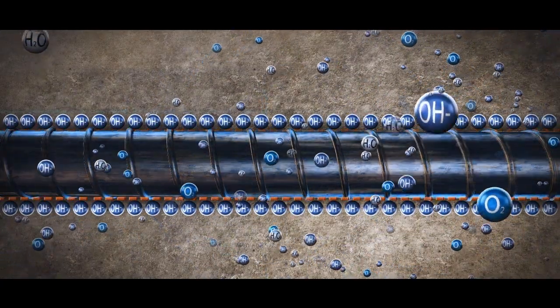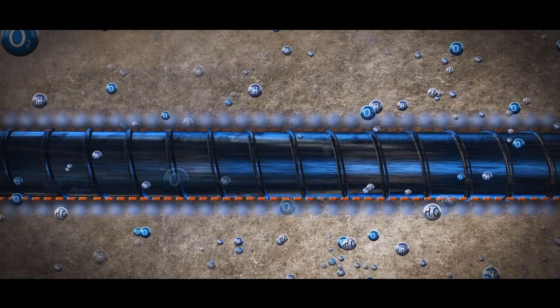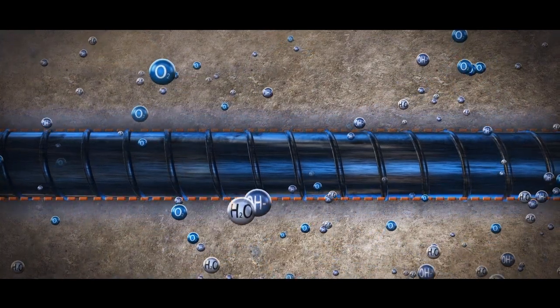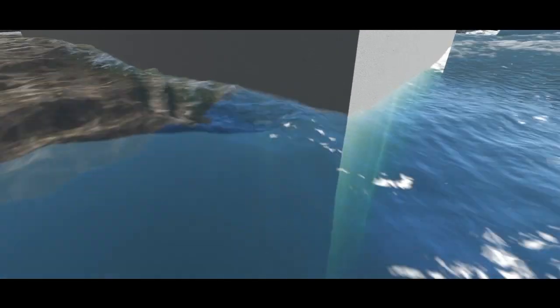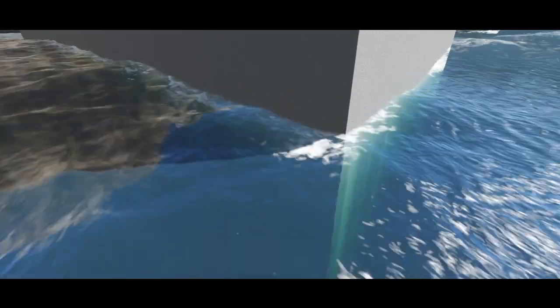Its high alkalinity creates a passive layer that blocks the reaction of steel with oxygen and moisture and prevents rust. So why are we concerned? The concern is with the stability of this passive layer.